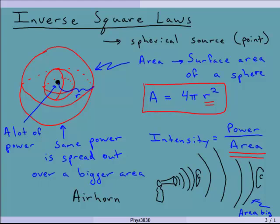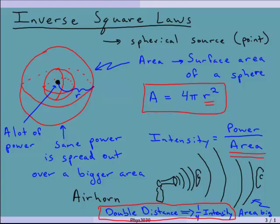If I move double the distance, I get a quarter of the intensity. This is something really important — it doesn't go off linearly. If it were linear, doubling the distance would give half the intensity. But because of the r squared, if I double the distance, I get a quarter of the intensity. This is really important, and just knowing this allows us to calculate a lot of things. You get away from something and it gets that much quieter.